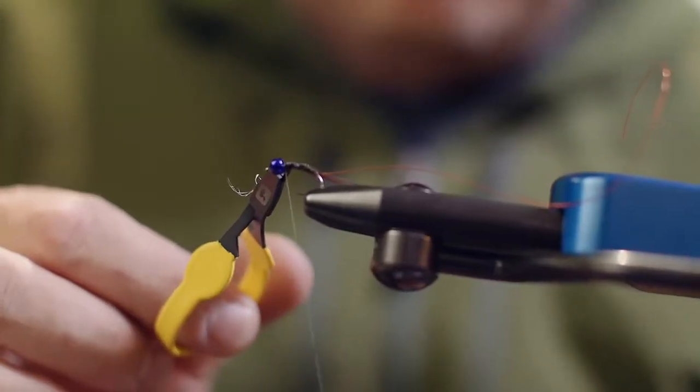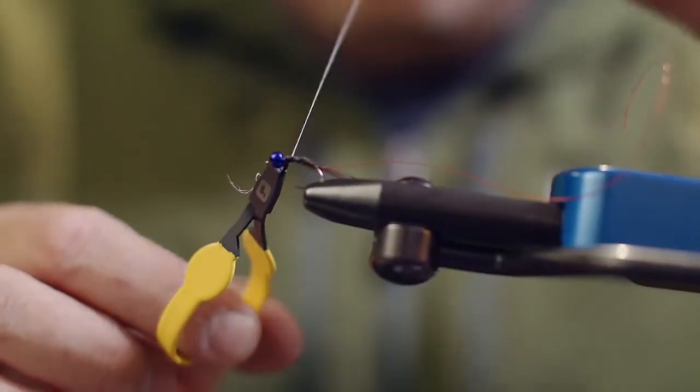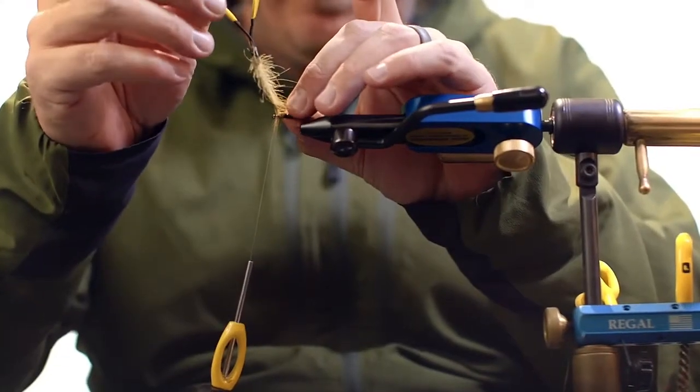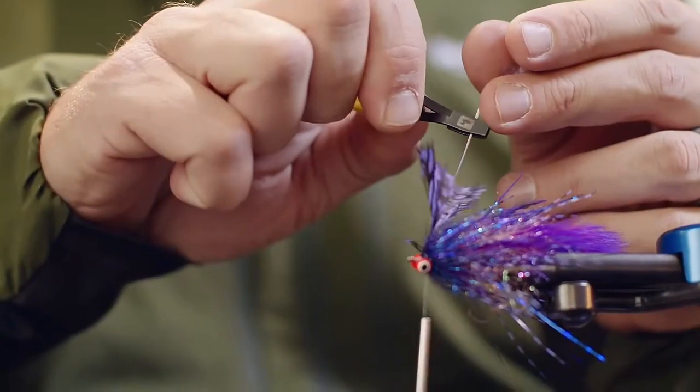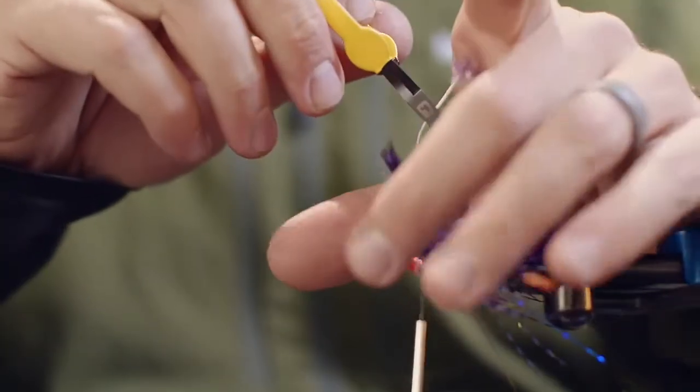The tips taper down to one-eighth of an inch, making them small enough for palmaring tiny dry fly hackles and delicate peacock hurls, while the spring steel is strong enough to handle larger feathers and heavy-duty synthetics.